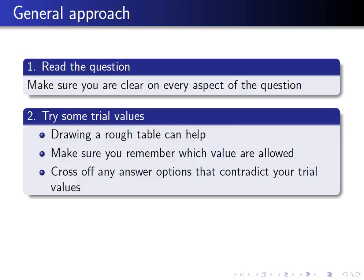The second step is to try some trial values. Draw some rough tables and put in some values for X and Y or A and B that meet the conditions. Calculate the function and cross off any answer options that contradict your trial values.